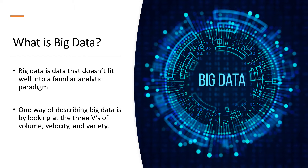One way of describing big data is by looking at the three V's of volume, velocity, and variety. These come from an article written by Doug Laney in 2001 and they're taken as the most common characteristics of big data, but they're certainly not the only ones. We'll talk about some other possible V's to consider in big data later in this course.